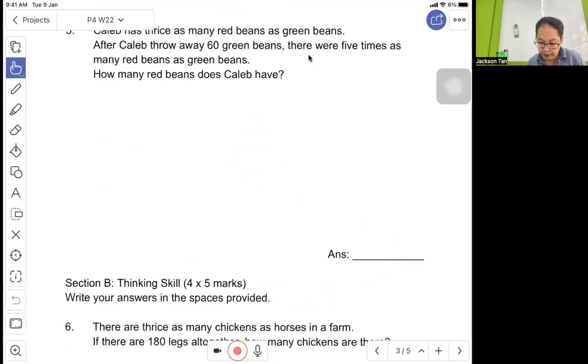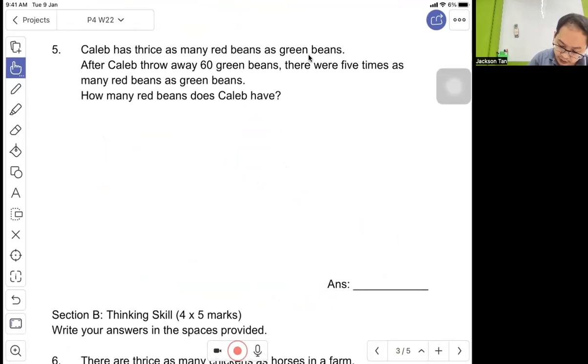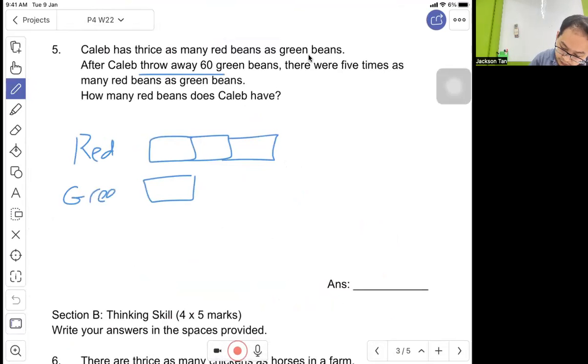Question 5: Caleb has three times as many red beans as green beans. After Caleb throws away 60 green beans, there were five times as many red beans as green beans.